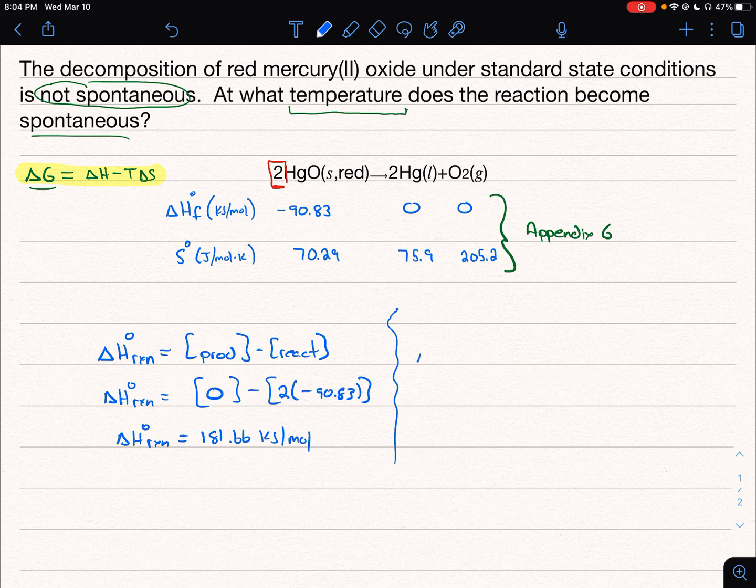So we can do the same thing to find delta S of reaction. And that's, again, going to be our products minus our reactants. And so we're just going to go delta S of reaction is equal to the sum of our products. And in this case, we have to put all of our terms in. So the mercury is 75.9, but there's two of them.